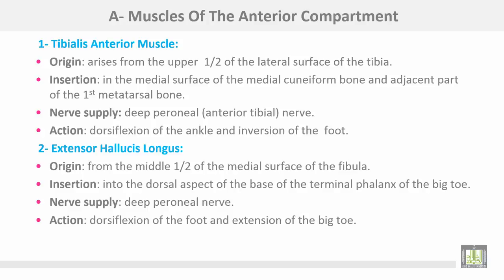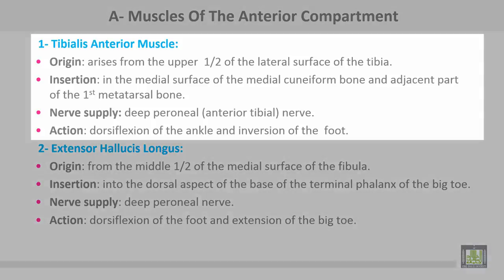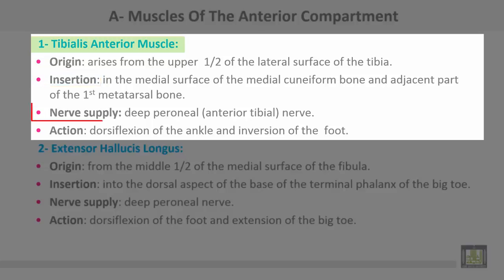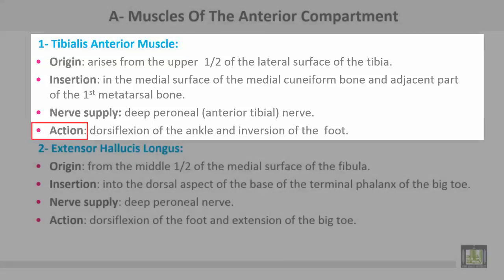The muscles of the anterior compartment. Number one: the tibialis anterior muscle takes origin from the upper half of the lateral surface of the tibia. Insertion is into the medial surface of the medial cuneiform bone and the adjacent part of the first metatarsal bone. Nerve supply is by the deep peroneal nerve, also called the anterior tibial nerve. Action: dorsiflexion of the ankle and inversion of the foot.